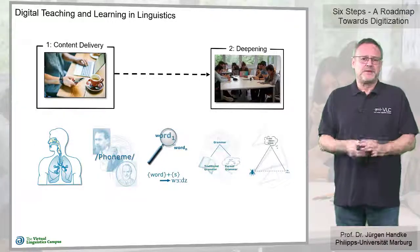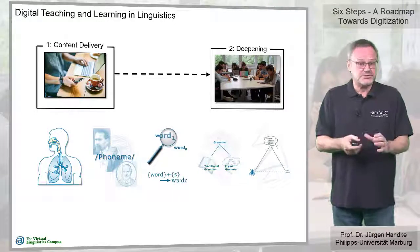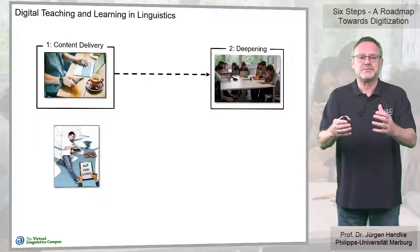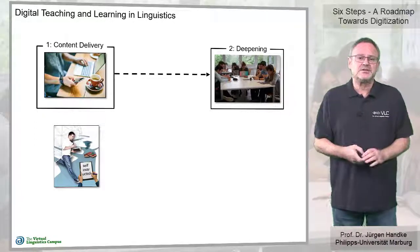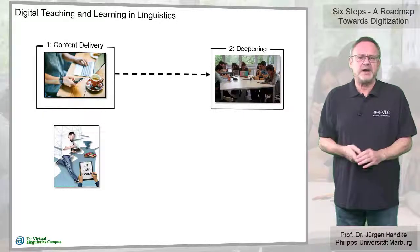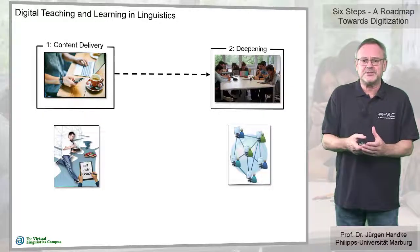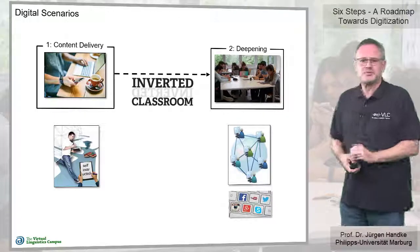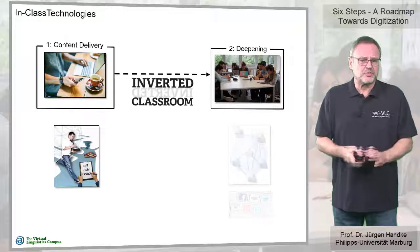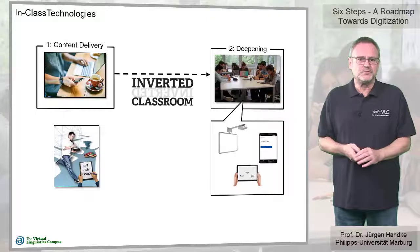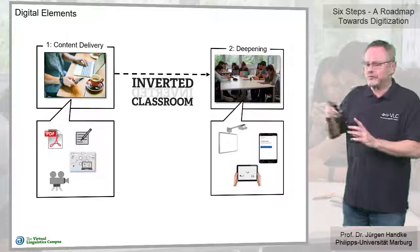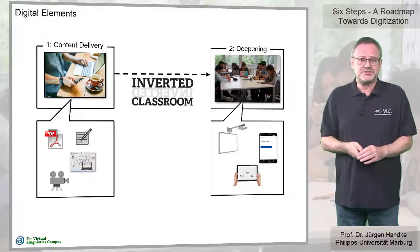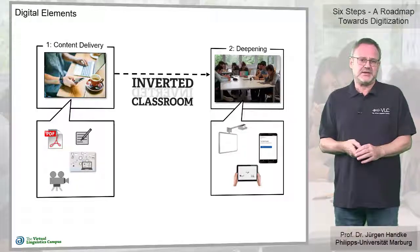In a modern teaching and learning scenario, the acquisition of the digital content is now self-guided and it takes place first. The subsequent phase of deepening takes place in class and involves a high degree of collaboration and social interaction. For such an inverted classroom format, apart from a set of classroom technologies for Phase 2, we need an arsenal of digital elements for Phase 1, such as educational videos, digital texts, literature references, images and so on.